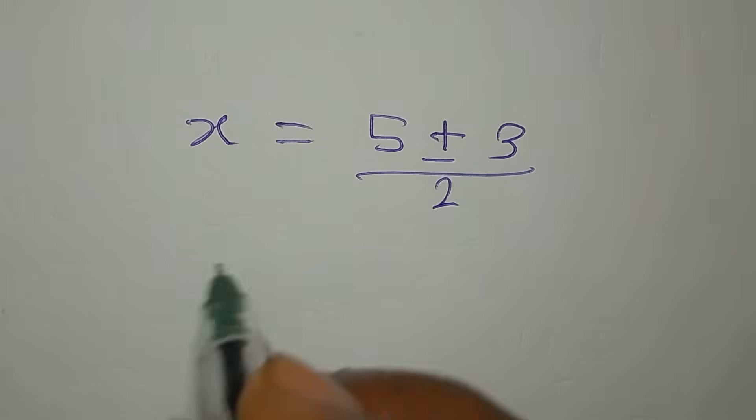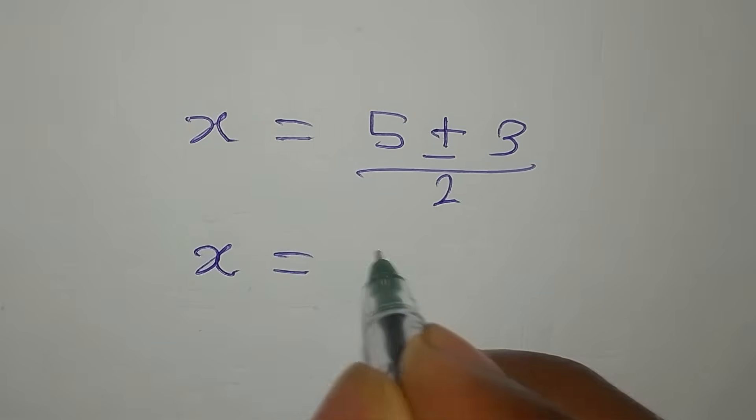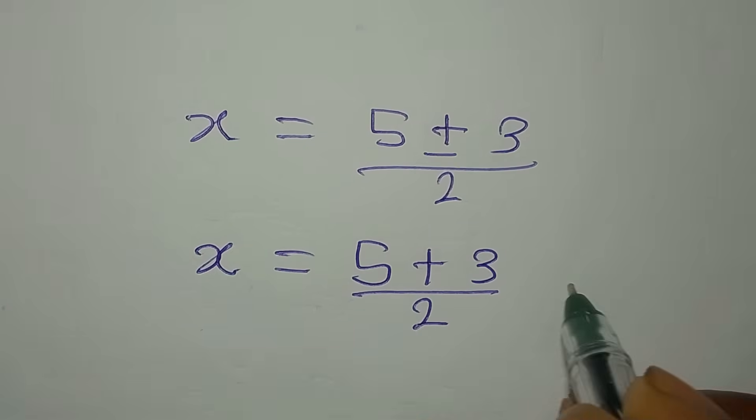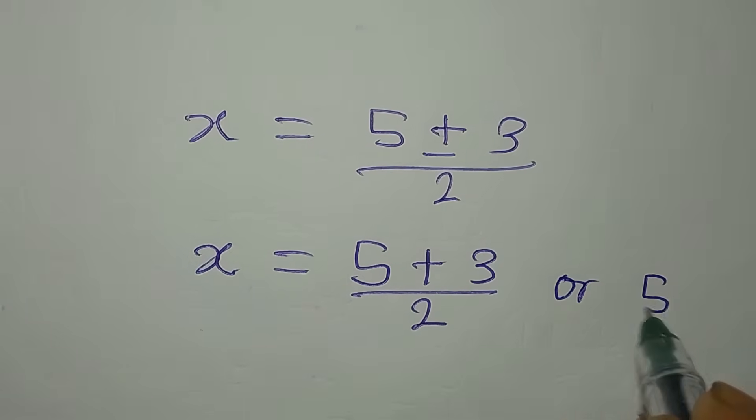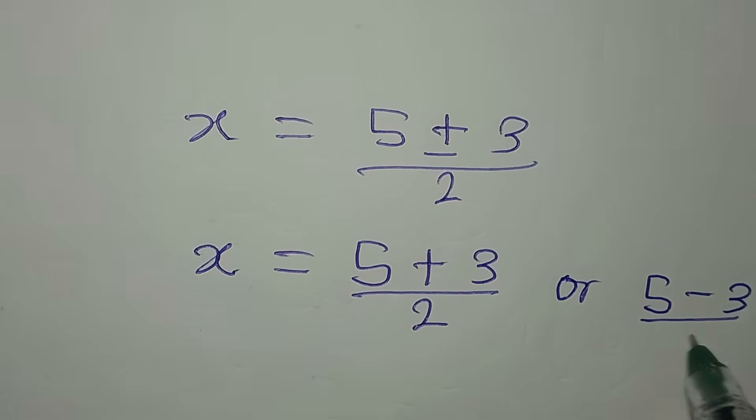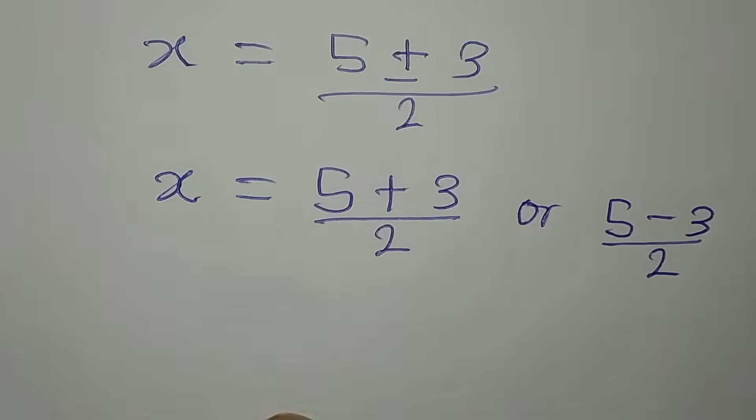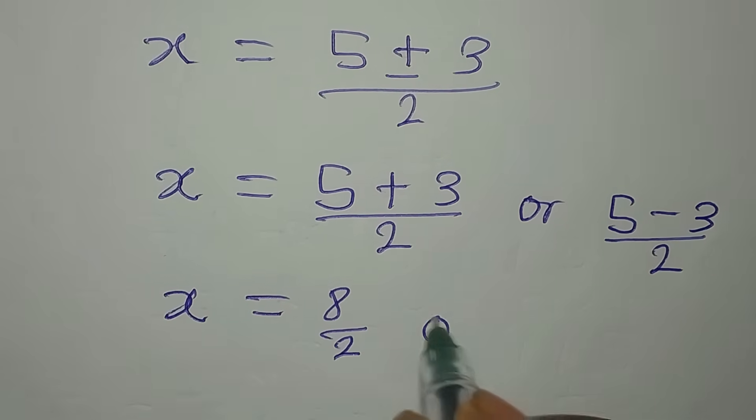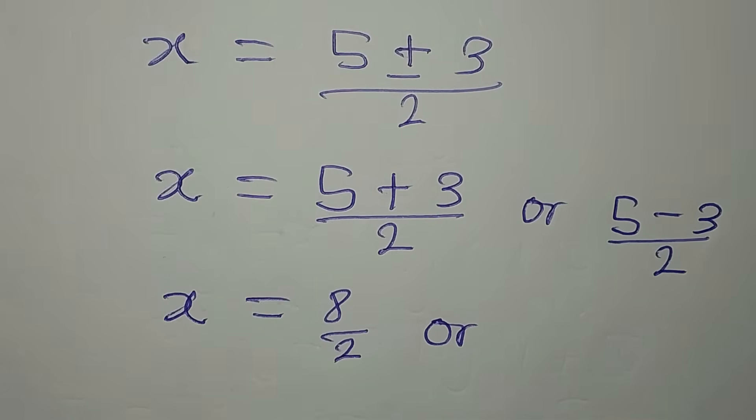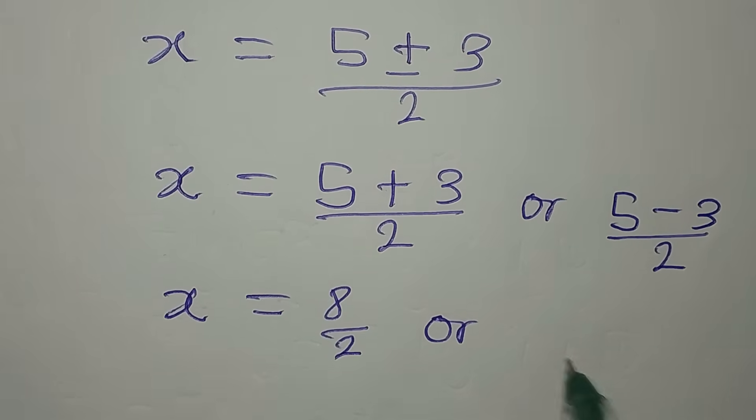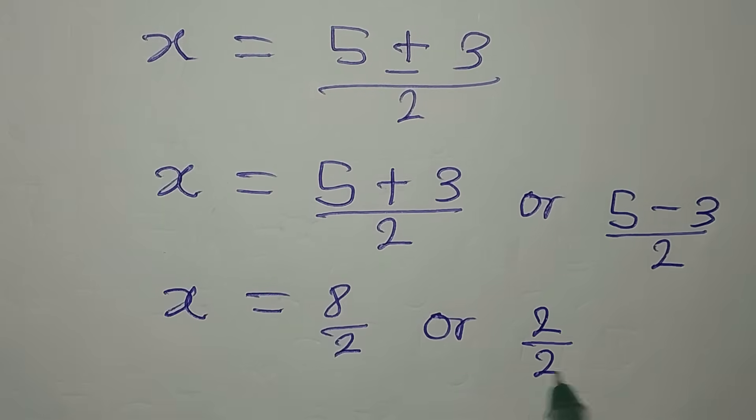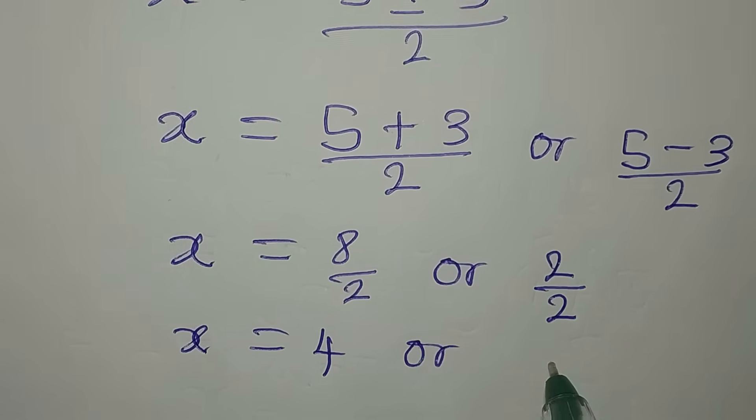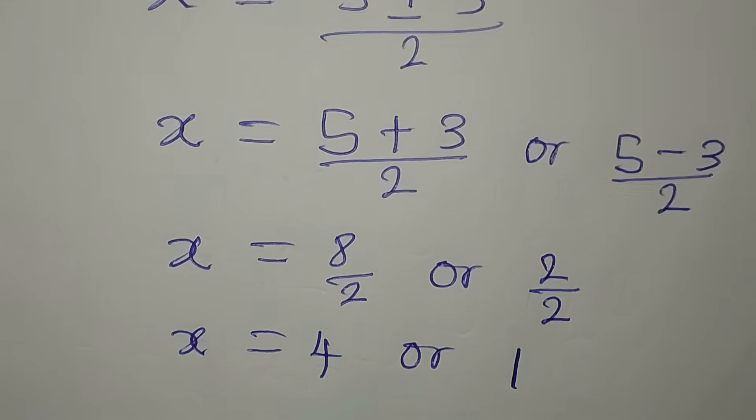x will now be 5 plus or minus square root of 9 is 3, divided by 2. So our x will now be 5 plus 3 over 2, or 5 minus 3 over 2. If we continue, then our x will be 8 over 2, or 2 over 2. Now x equals 4 or 1.